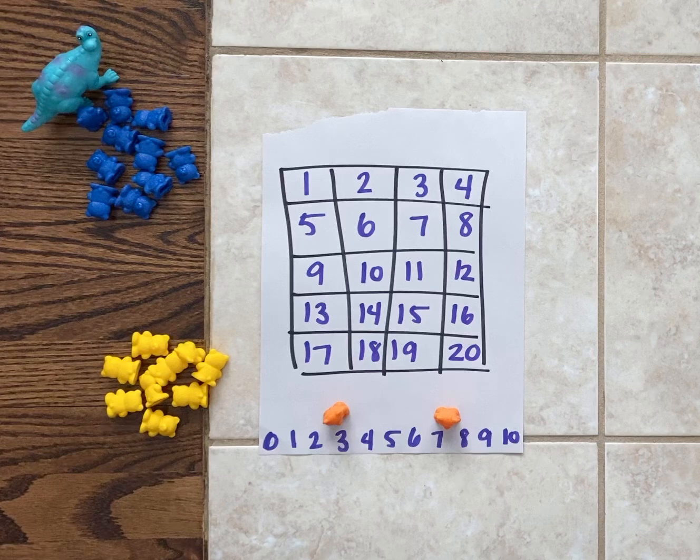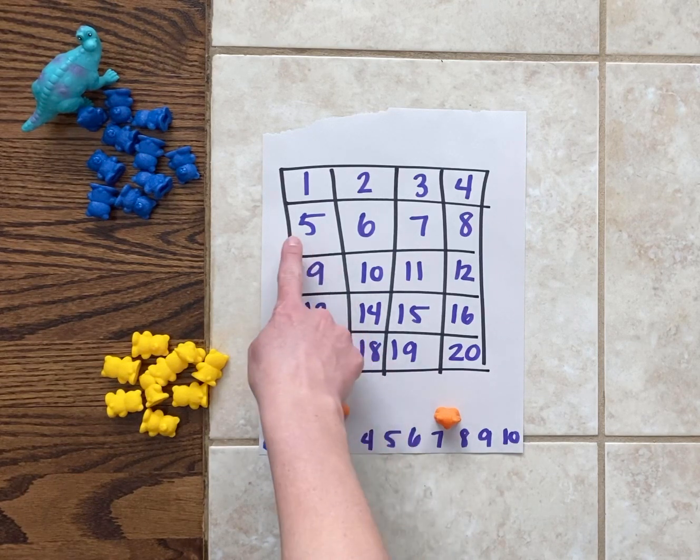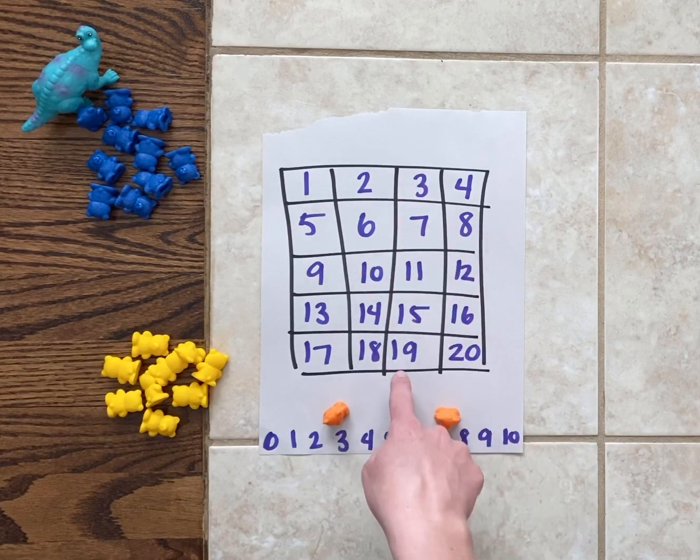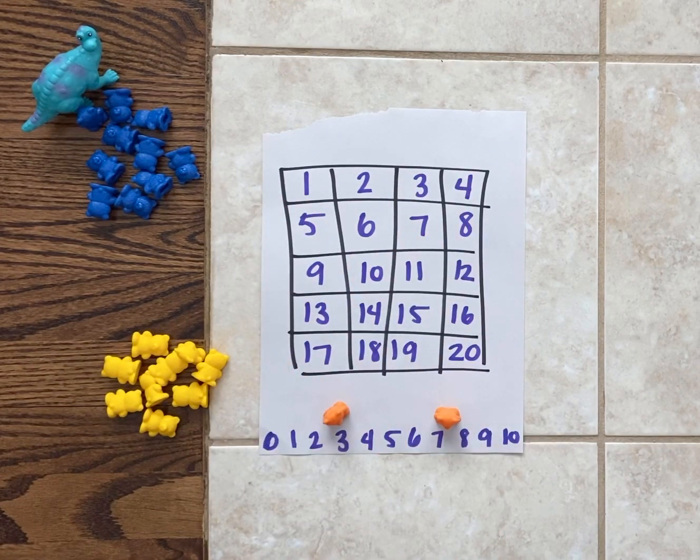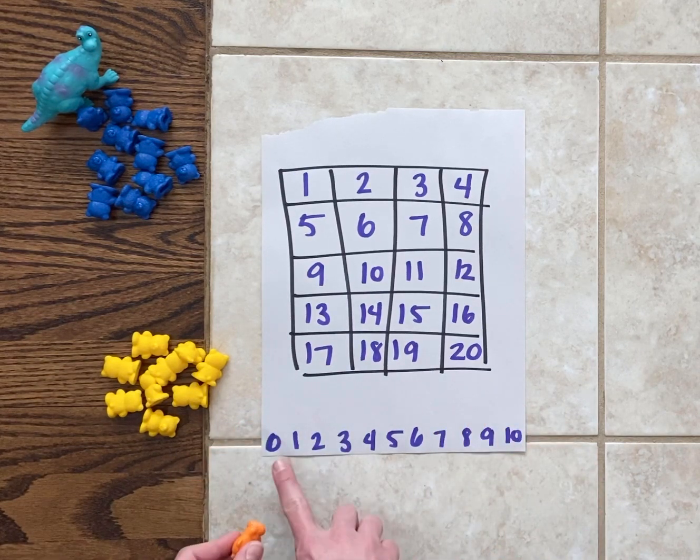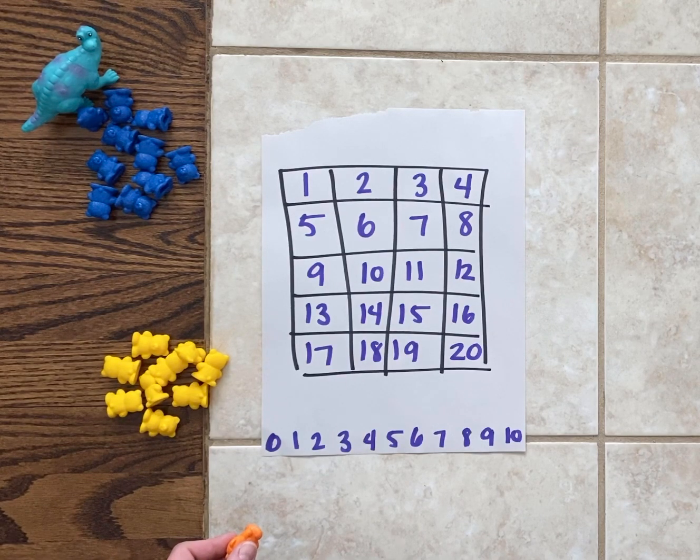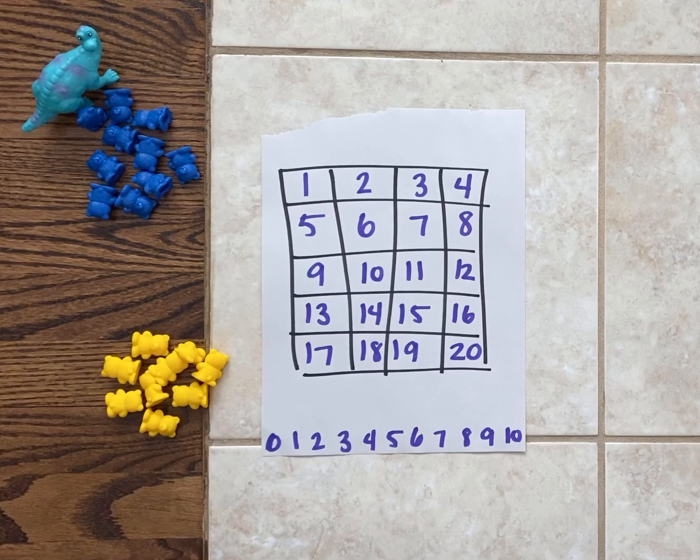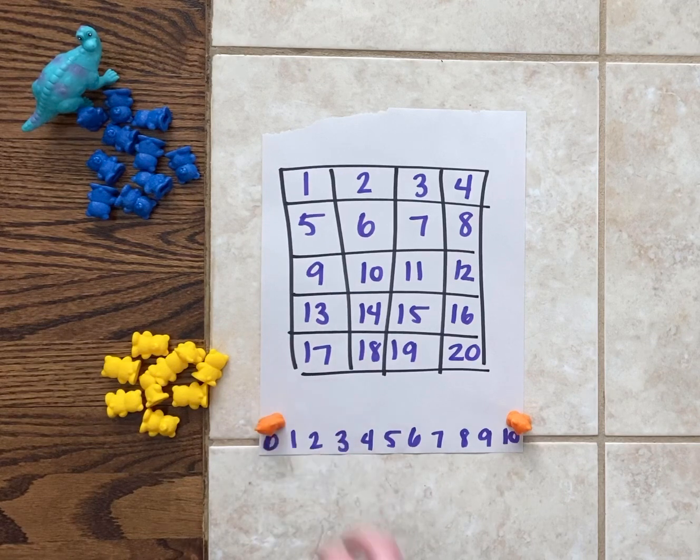The idea is to be the first person to get four of your markers in a row. They could be horizontal, vertical or diagonal either direction. I'm going to go first. I can place my markers on any two numbers on the bottom of this board. I will then add those two numbers together to get a sum. I'm going to do 10 plus 0.